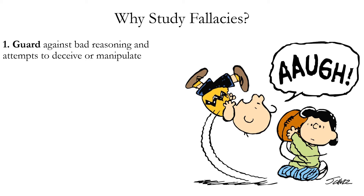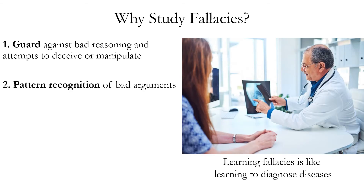So when we study fallacies, we at least have some defense against bad reasoning — we have the ability to recognize when this is happening, so we won't be repeatedly duped by the same sorts of errors. Related to this is the fact that when we study named fallacies, we learn a skill of pattern recognition. We can spot particular types of bad arguments when they appear based on a cluster of properties, similar to the way a physician learns to diagnose diseases based on a cluster of symptoms.